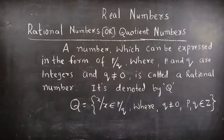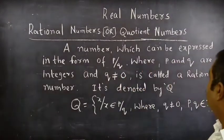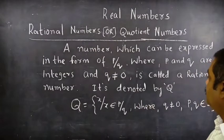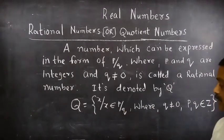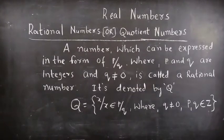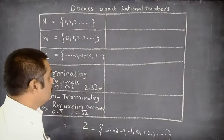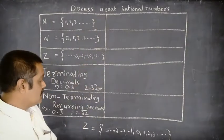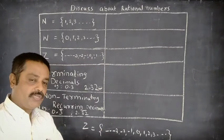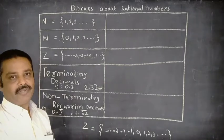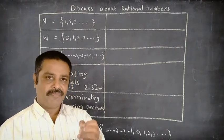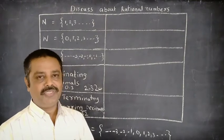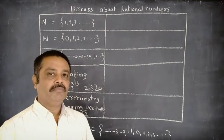Now, rational numbers, or we say quotient numbers. A number which can be expressed in the form of P/Q, where P and Q are integers and Q is not equal to 0, is called a rational number. It is denoted by Q. Q = {x : x = P/Q, where Q ≠ 0 and P, Q belong to Z}.